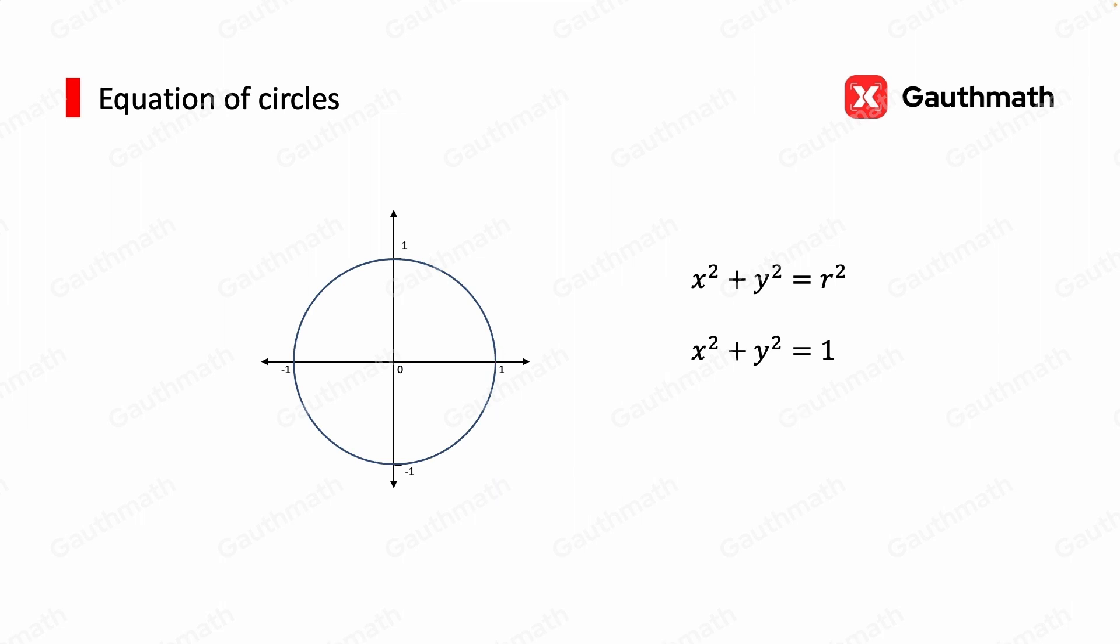Let's try a more complicated example. The point 1 over 2 and root 3 over 2. Substituting this point into our equation for the circle, we can see that the relationship still holds.